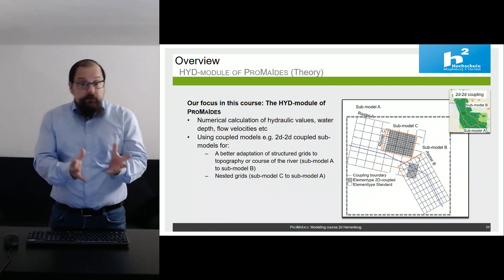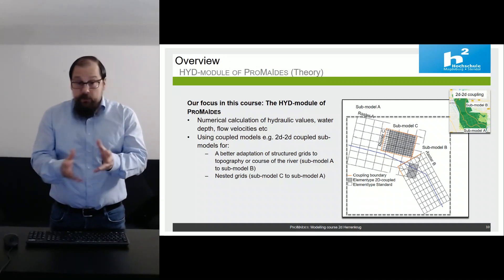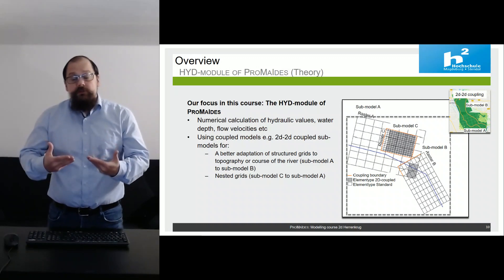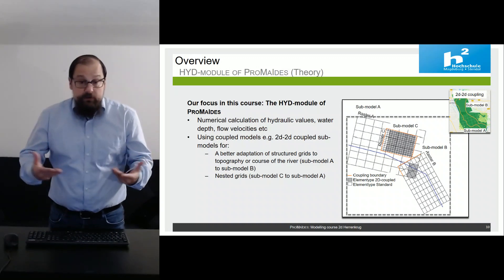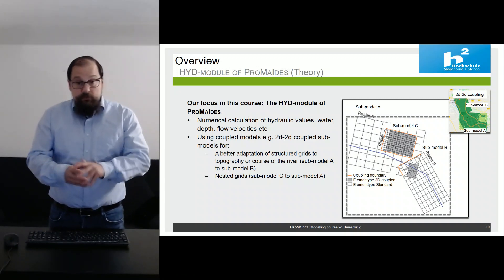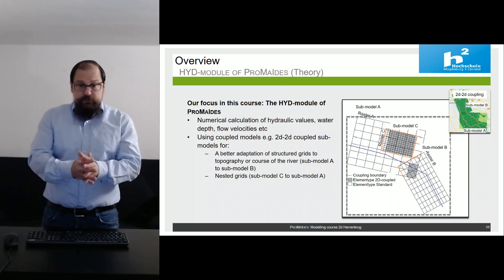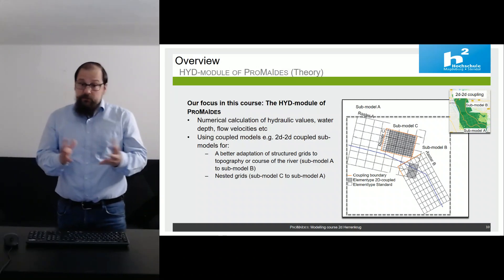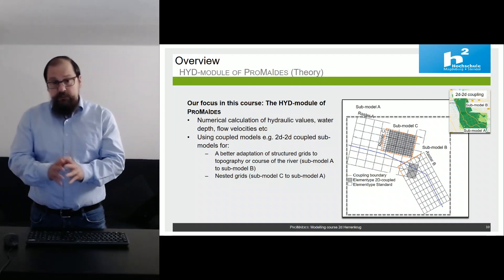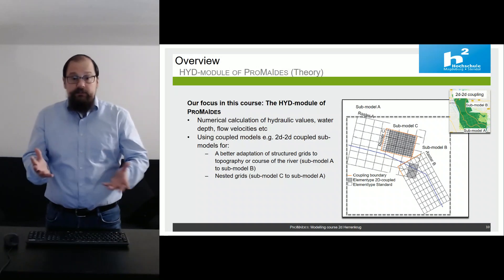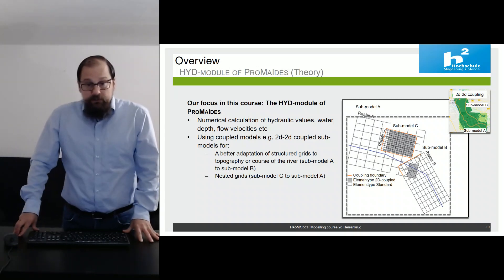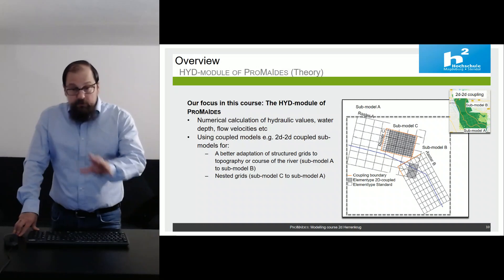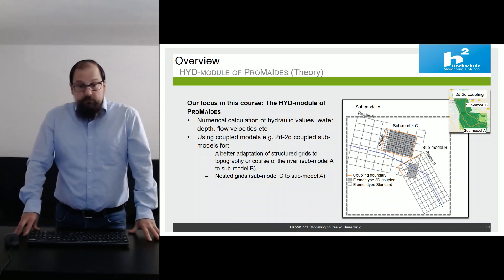A big advantage of structured grids is that it's quite simple to produce the grid itself. For unstructured grids you have to do mesh generation and so on. Here it's quite simple — you make some rectangles, you make one click in QGIS more or less, and you get your 2D grid.